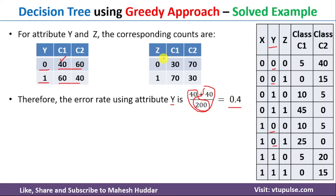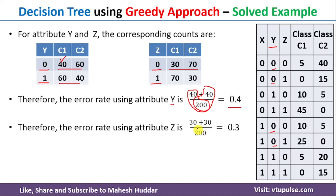Similarly, for the third attribute Z, with Z equals 0 and Z equals 1 and two classes C1 and C2: the minimum error for Z equals 0 is 30/200, and the minimum error for Z equals 1 is also 30/200. So 30 plus 30 divided by 200 gives a classification error of 0.3 for Z.